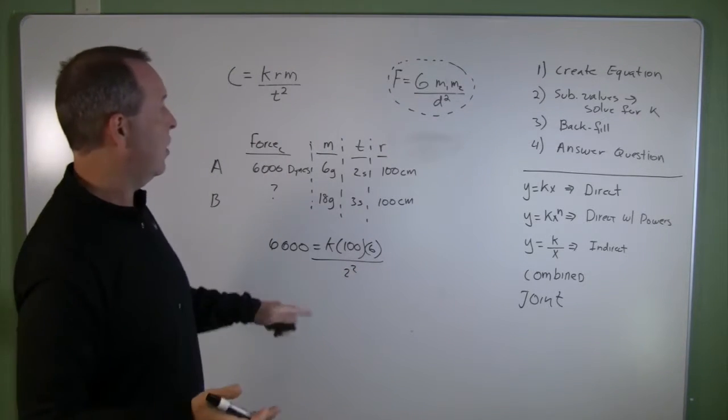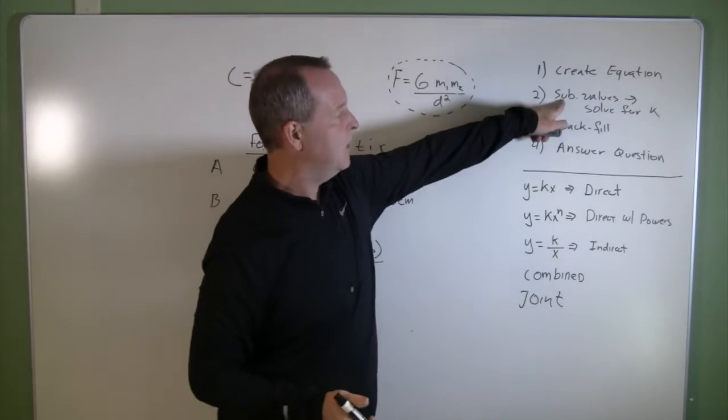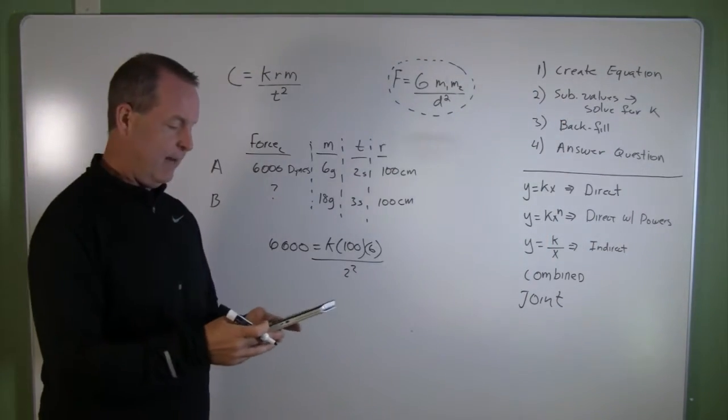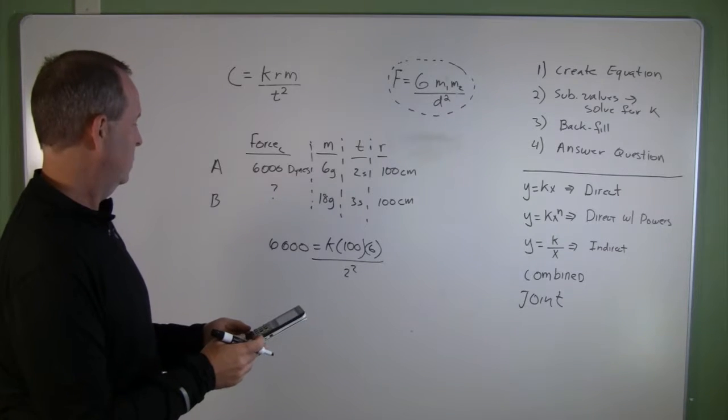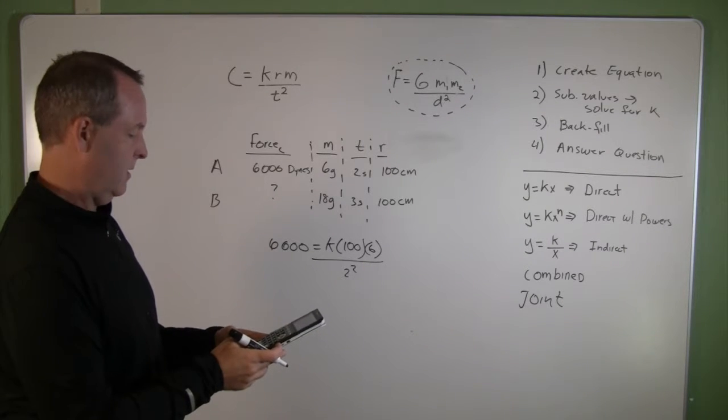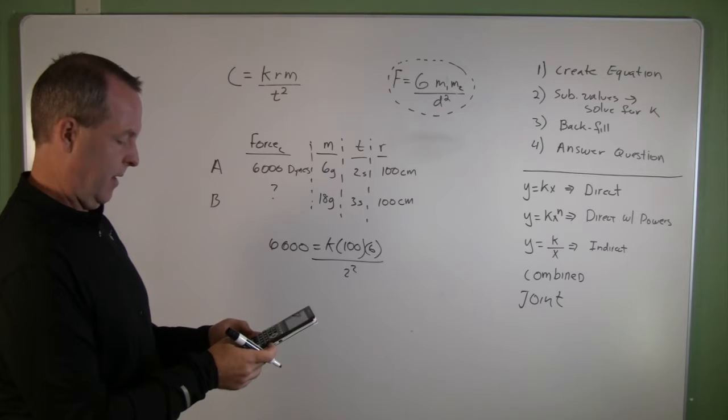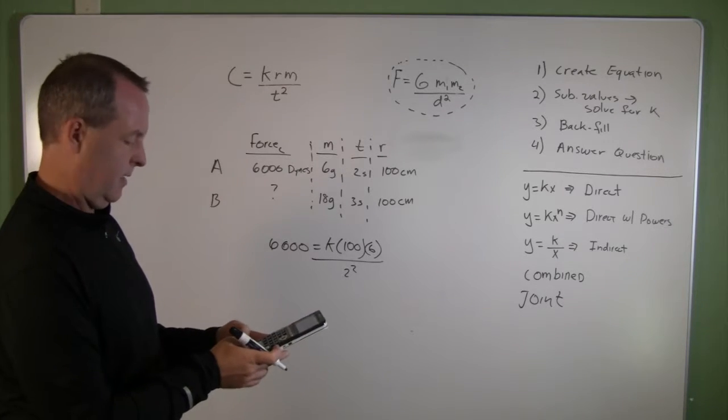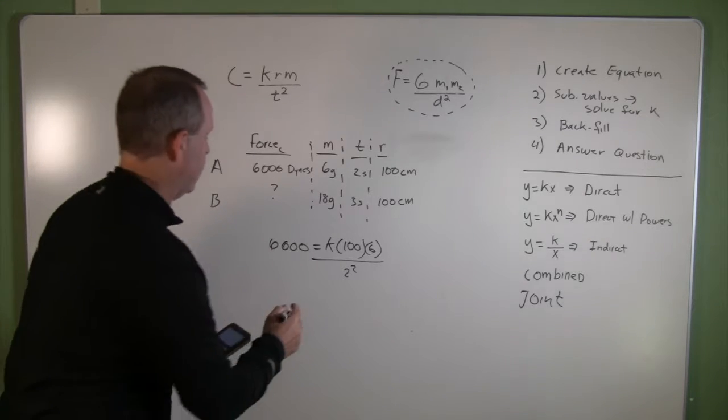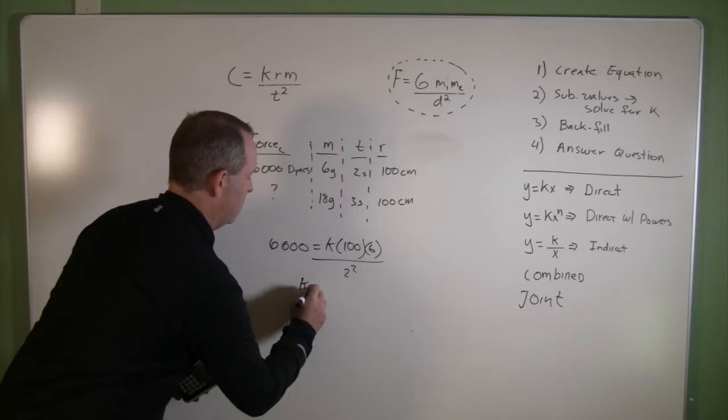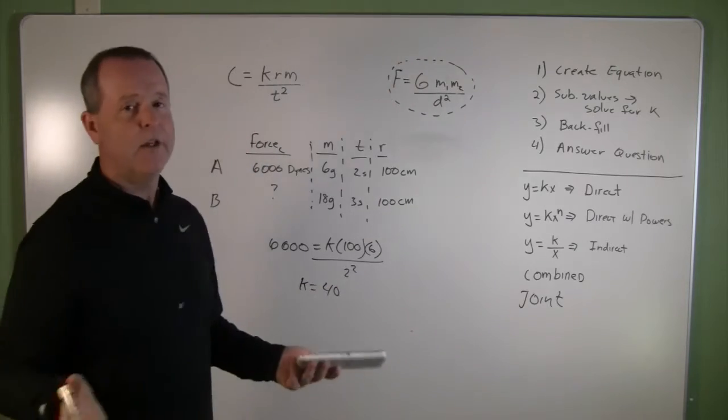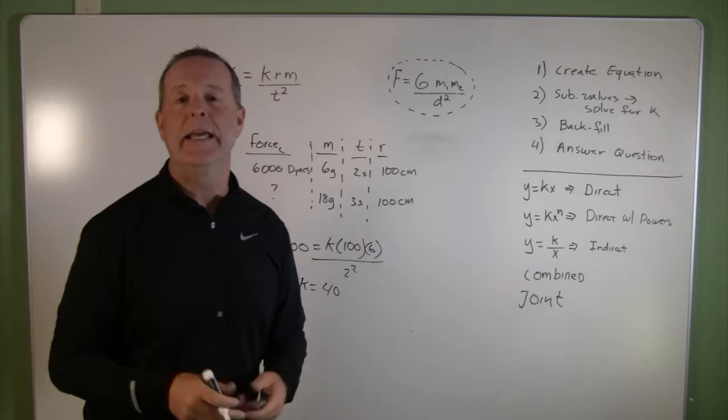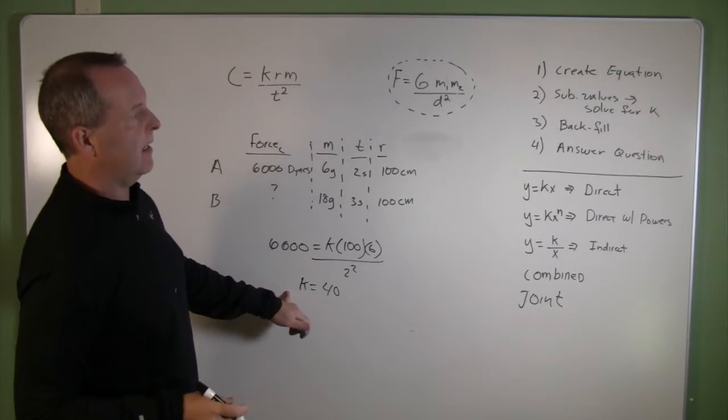And that gives us our equation. Next, we substitute the values in, then we solve for K. 6,000 times 4 divided by 600 gives us a K of 40. And there's no units. I haven't mentioned that before, but this proportionality constant is unit free. 40. So I found my K.